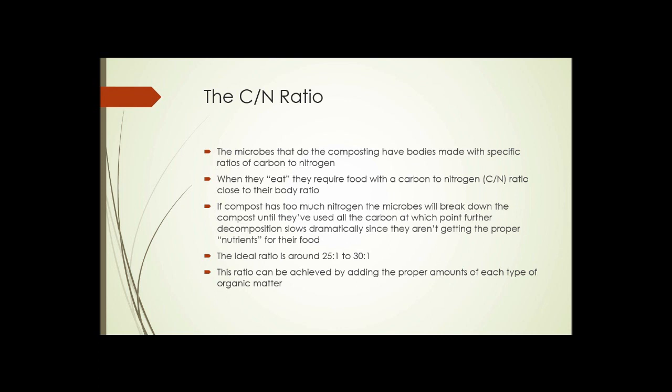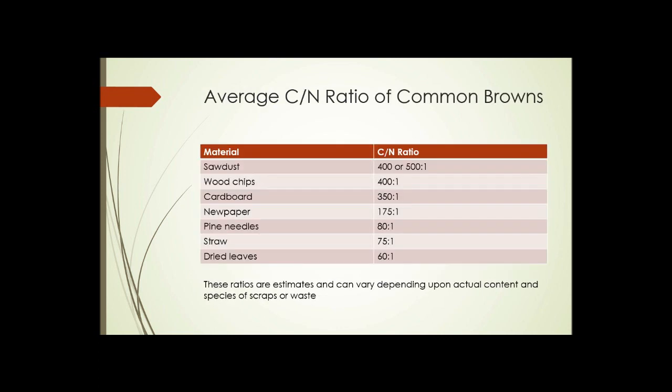Here we see the average carbon to nitrogen ratio of common browns. First is sawdust, 400 or 500 to 1 carbon to nitrogen ratio. So sawdust itself would decompose quite slowly if it didn't have other things mixed with it. Wood chips, about the same ratio. Cardboard, 350 to 1. Newspaper, 175 to 1. Pine needles, 80 to 1. Straw, 75 to 1. And dried leaves, 60 to 1.